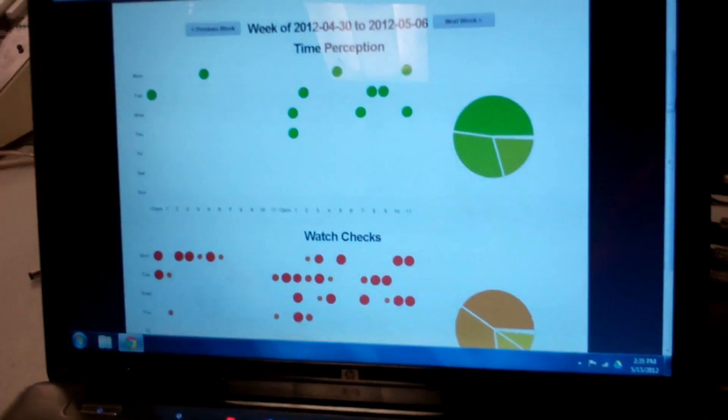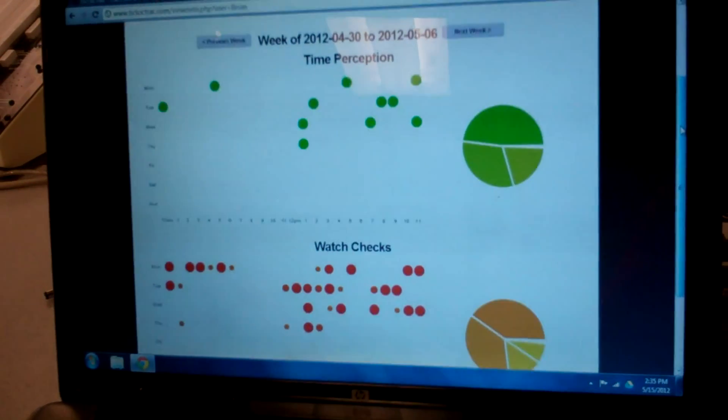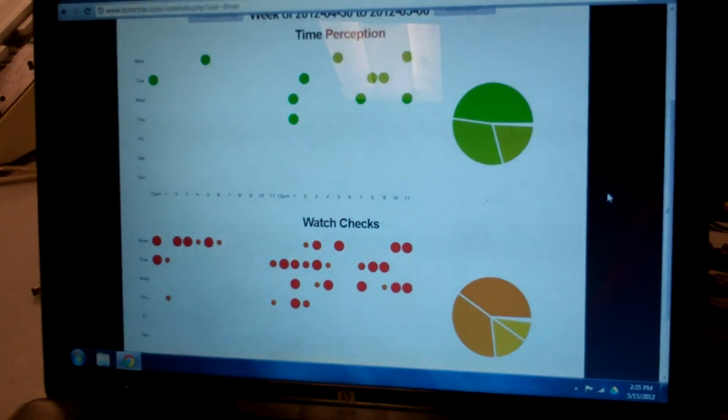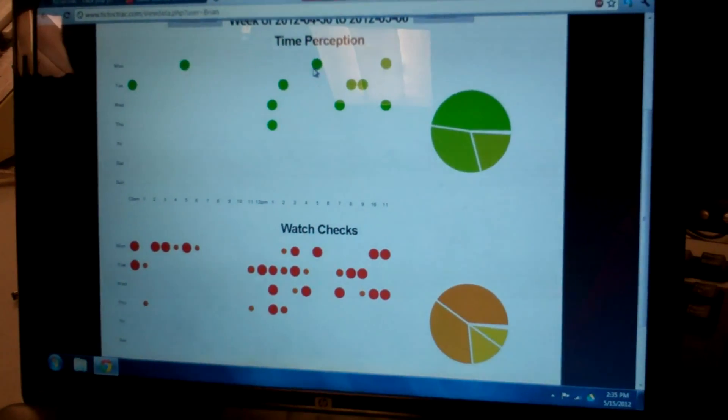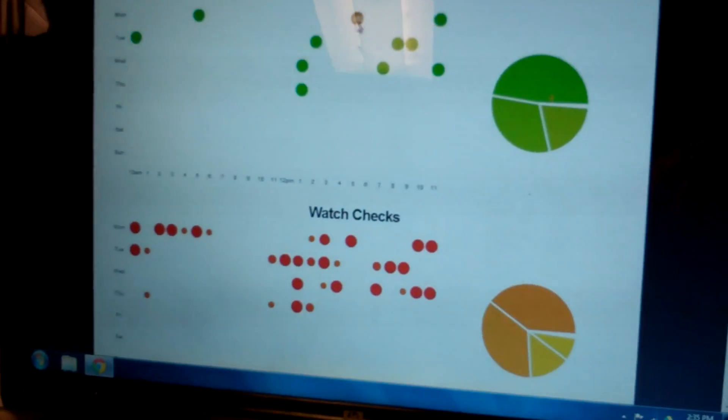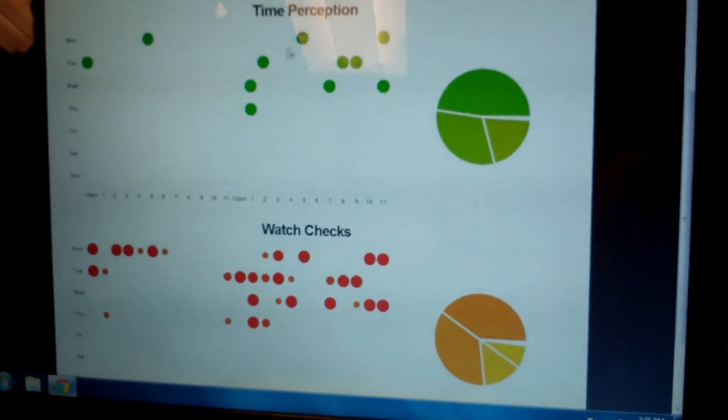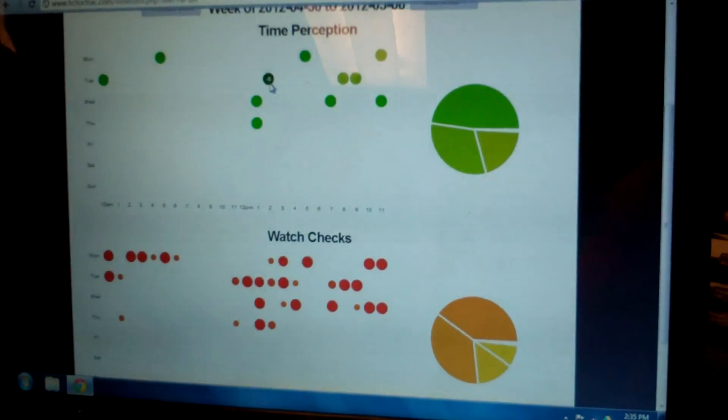Once on there, we have actually set up an entire site where you can graph all your data week by week, day by day, hour by hour. So this shows up here time perception, and it actually shows how many minutes off you were. So there, that was a large negative 362 minutes over the course of that hour. Other places, it's a much smaller negative 9.